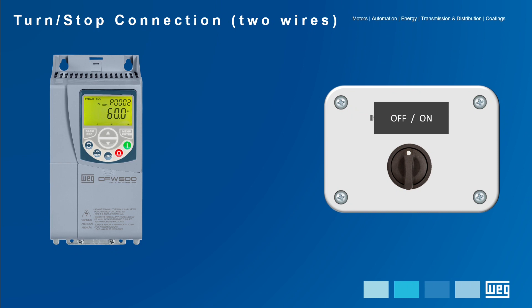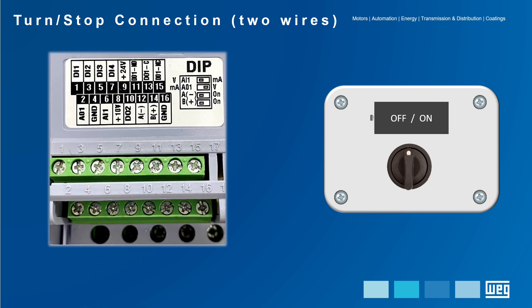In the TURN STOP command, also called ON OFF or two-wire control, it is recommended to use a normally open contact block associated with a fixed selector switch connected to the digital input of the plugin module. It is worth remembering that for this example we will consider the CFW500 IOS standard plugin module as the basis. For other plugin modules, the user must pay attention to the identification of the terminals related to the chosen model.